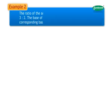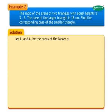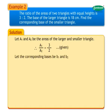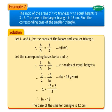Example 2. The ratio of the areas of two triangles with equal heights is 3 is to 2. The base of the larger triangle is 18 centimeters. Find the corresponding base of the smaller triangle. Solution: Let A1 and A2 be the areas of the larger and smaller triangle respectively. It is given that A1 upon A2 is equal to 3 upon 2. Let the corresponding bases be B1 and B2. Therefore, A1 upon A2 equals B1 upon B2 for triangles of equal heights. So 3 upon 2 equals 18 upon B2, giving B2 equals 18 into 2 upon 3, therefore B2 equals 12. Thus, the base of the smaller triangle is 12 centimeters.